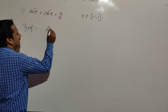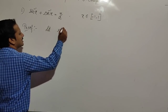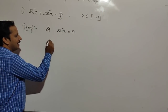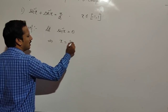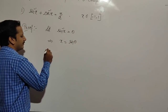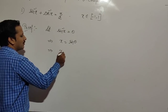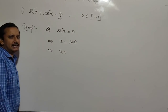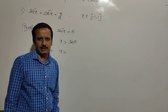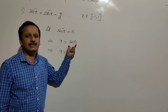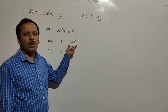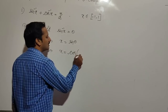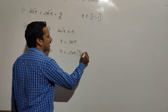I will take: let sin inverse x equal to theta. This will imply, according to the definition, x is equal to sin theta. Now, I want to write sin theta in terms of cos. Sin theta can be written as cos of pi by 2 minus theta.